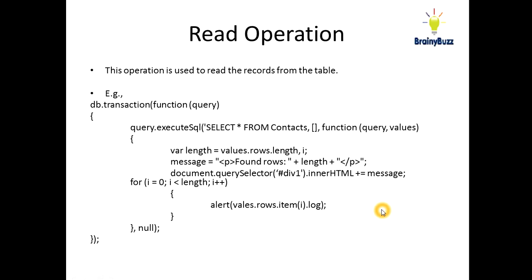Like, you have entered the values in your database but you also want to read them. The read operation will be used to read the records. For this, we have another query — SELECT * FROM contacts. Then a function with query values — you get the row length to find how many rows are present in the contacts table. After that, you want to display the message like 'found rows — this many number of rows you have found.' Then you give the query selector because you want to write somewhere in your web page, so you can use document inner HTML. Then you write a loop — like value.rows.items — and this is the way your values will be printed on the document.